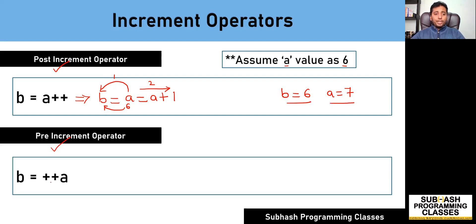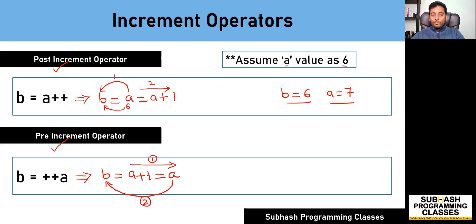Whereas when you get an expression with a pre increment operator, like b = ++a, this must be considered as: a = a + 1; b = a. It means first increment the value of a as the first step, and then store the incremented value into b as the second step. So if the initial value of a is 6, then a + 1 becomes 7, and after storing that into b, the value of b is also 7.